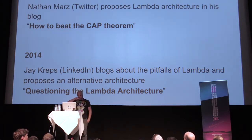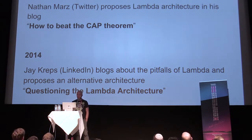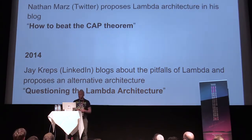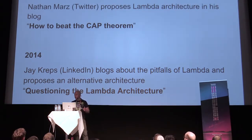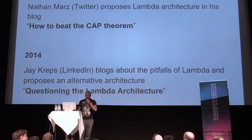Nathan Mars, a guy working on Twitter, wrote up a blog post in 2011 called "How to Beat the CAP Theorem." In 2014, Jay Kreps at LinkedIn blogged about the pitfalls of Lambda and proposed an alternative architecture called Kappa - his blog is called "Questioning the Lambda Architecture." There's a couple of years between these posts, and Jay Kreps had a lot of experience implementing Lambda architectures when he wrote up his Kappa blog. These are the two architectures we're going to compare.